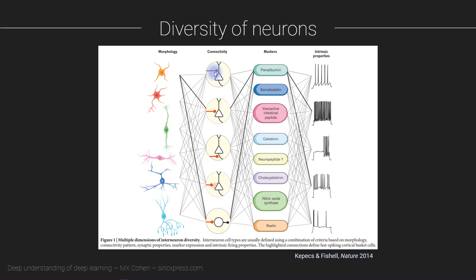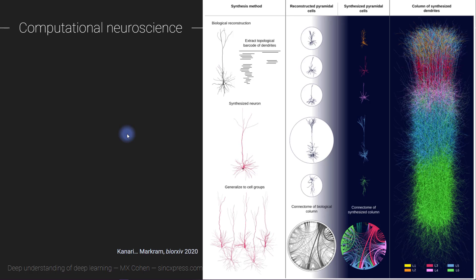We can also try to group neurons according to their morphology, their patterns of connectivity with other neurons, their molecular markers, and their functional electrochemical properties. Categorizing neurons is a really hard problem, and it's not even clear whether there is an actual solution. There is an entire field within neuroscience called computational neuroscience, which aims to understand fundamental neural principles by simulating neurons on a computer. These are the real artificial neurons — they truly deserve the name 'artificial neurons.'